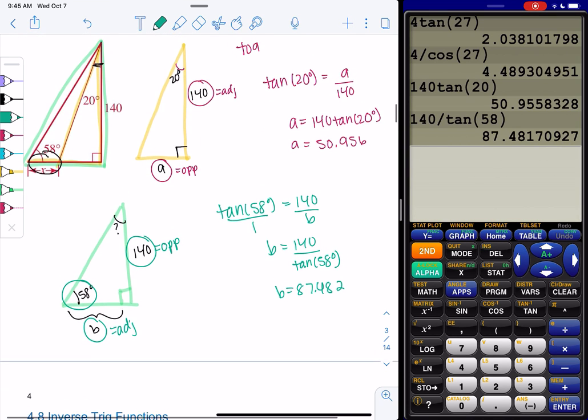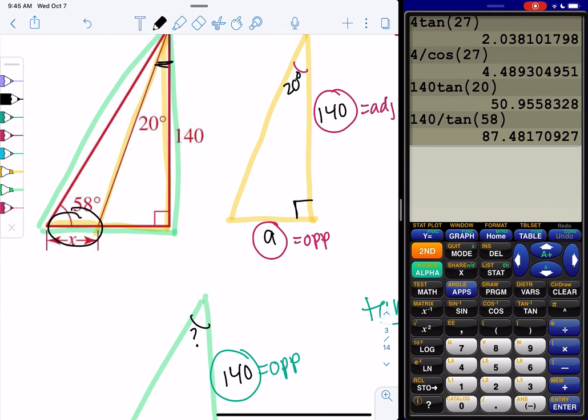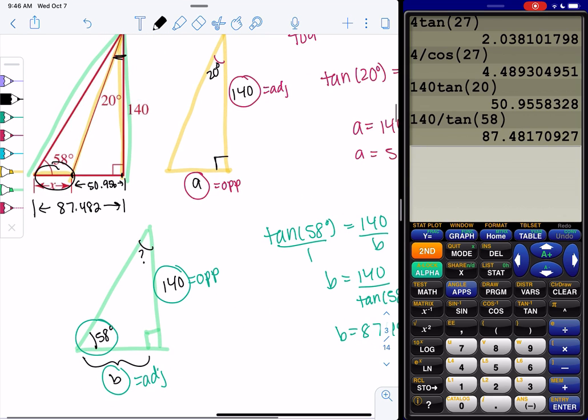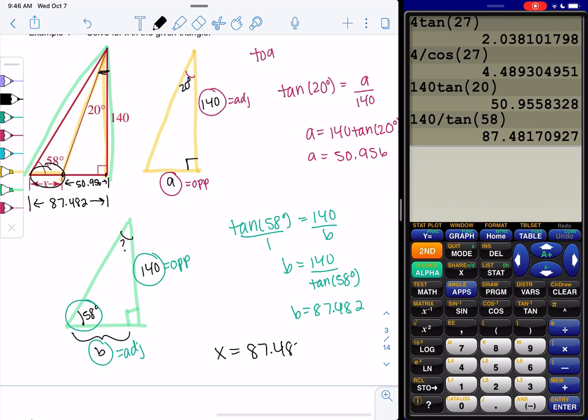So let's label this. So this little piece right here was, from here to here, was 50.956. And then we found out the whole distance was 87.482. So X would just be the difference between the two. So that's why we found both of those. Pictures are super helpful here. So X will just be 87.482 minus 50.956. So we can't use sine, cosine, or tangent to find X immediately, because X is not, that's not a right angle. All right, so we had to use tangent for the other two triangles, because those had right angles, and then we can use subtraction to find X.